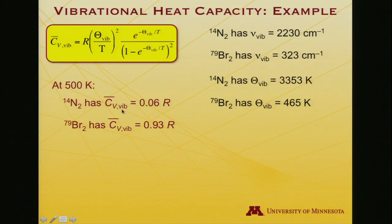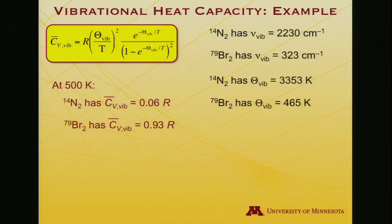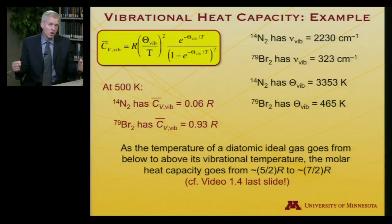We've already started with these data. We took the vibrational frequencies. We transformed them to vibrational temperatures. And, doing the calculations, we found that molecular nitrogen has a vibrational component to the molar heat capacity of 0.06 R, but molecular bromine 0.93 R. Almost an entire factor of R. And, as the temperature of a diatomic ideal gas goes from below its vibrational temperature to above its vibrational temperature, the molar heat capacity will go from 5 halves R, so that's just translations and rotations, up to 7 halves R. As you get a full factor of R from that one vibrational degree of freedom. Keep in mind that those are different. Vibrations can contribute up to R. Translations and rotations, only one half R.